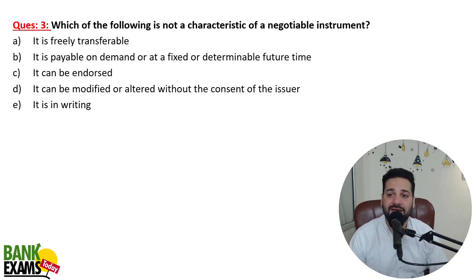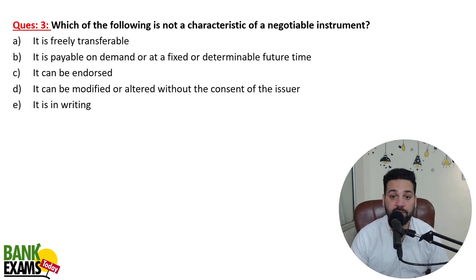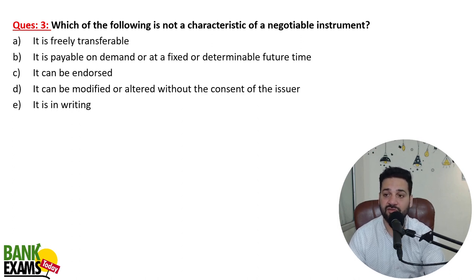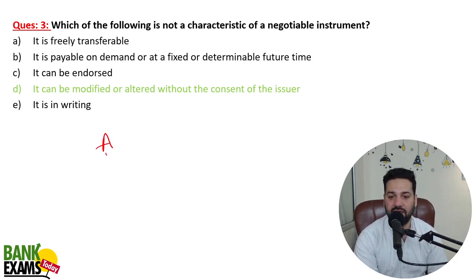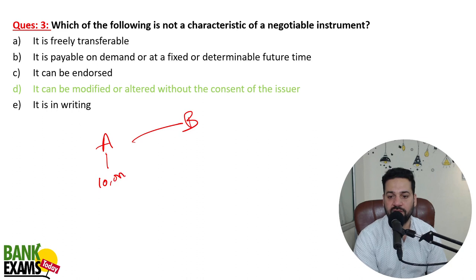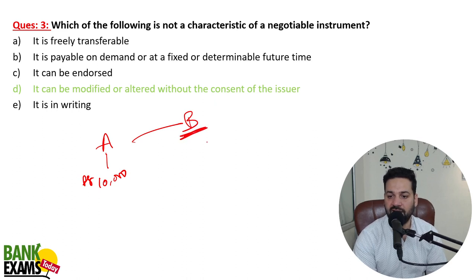Which of the following is NOT a characteristic of a negotiable instrument? A negotiable instrument is freely transferable, payable on demand, can be endorsed, and is in writing. The option that it can be modified or altered without the consent of the issuer — that is NOT a characteristic. For example, A gave a cheque to B. Say A had to make a payment of ten thousand rupees to B, so A wrote a cheque for ten thousand rupees.